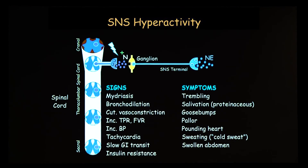For sympathetic hyperactivity, it's kind of the opposite picture. You have mydriasis — the pupils are dilated. You have cutaneous vasoconstriction, which is why you turn pale. Blood pressure tends to go up. There's slow gastrointestinal transit because both norepinephrine and adrenaline have that inhibitory effect. There's insulin resistance, which can be relevant to people with borderline adult-onset diabetes. Symptoms include trembling — that's part of the attempt to raise temperature — shivering, and proteinaceous saliva.